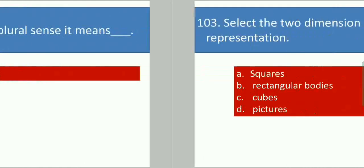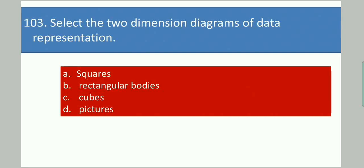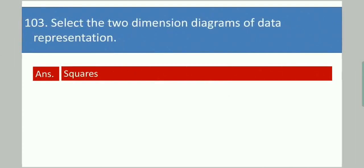Next question: Select the two-dimension diagrams of data representation. Your options are: squares, rectangular bodies, cubes, pictures. Your answer is squares.